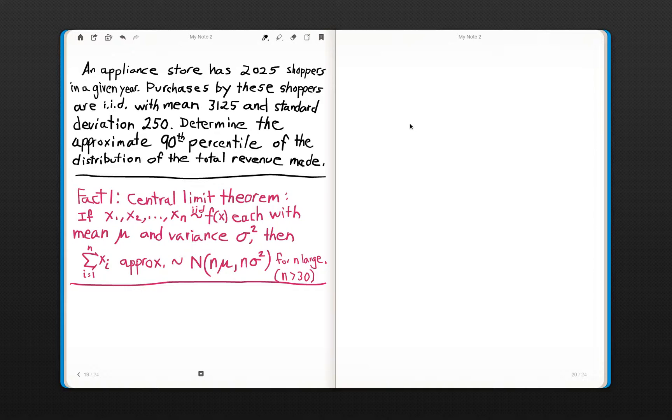We are preparing to work a problem involving the normal distribution and the central limit theorem. Here we have an appliance store that has 2,025 shoppers in a given year.